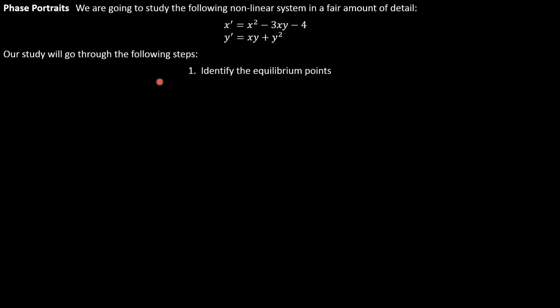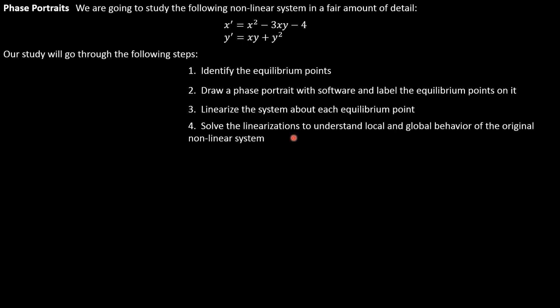We're going to study it with the following steps. We're going to first identify equilibrium points, sort of like we did with the predator-prey problem where we found two equilibrium points. Next, we're going to draw what's called a phase portrait. Basically, that means we're going to use software such as p-plane to draw a picture of what our solutions look like. And then we're going to use a mathematical tool called linearization in order to study the equilibrium points.